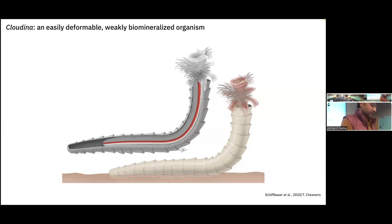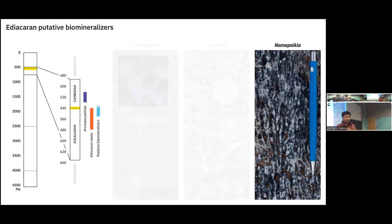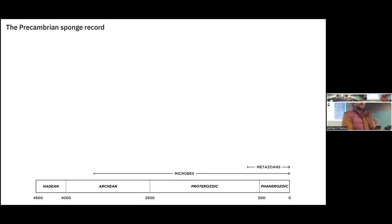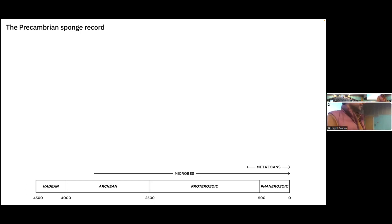Next I'm going to show you something that is a putative sponge: Namapoikia. Namapoikia grows in the same reefs as Cloudina — it's essentially just a labyrinthian construction. Namapoikia is interesting for two reasons: first, it may have been a framework reef builder; and second, the pre-Cambrian sponge record is poorly understood and heavily debated. If we know that archaeocyathids are sponges, it might be interesting to find a pre-Cambrian sponge building reefs. Here I've turned the timeline on its side. We know microbes started 3.5 billion years ago; molecular clock data suggests metazoans were around 700 million years ago, but we have no fossils of them.